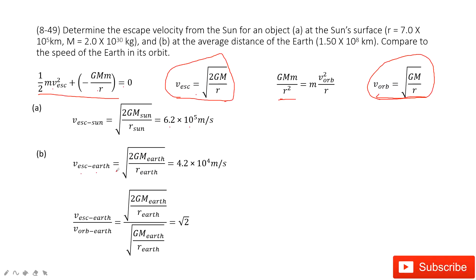And then the circular motion velocity for all planets around the Earth is this one. If you use the escape velocity divided by the orbital velocity, it's just square root of 2. Just square root of 2.